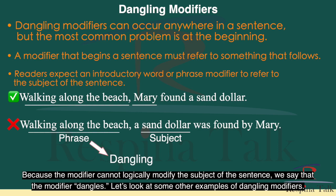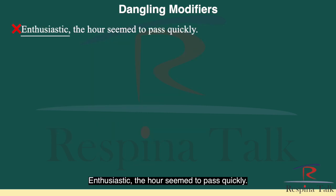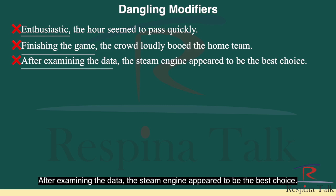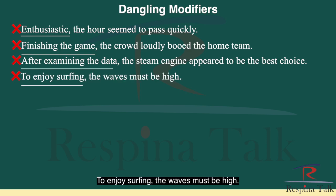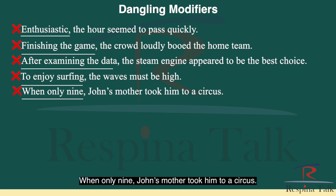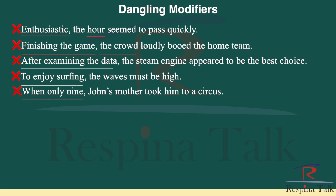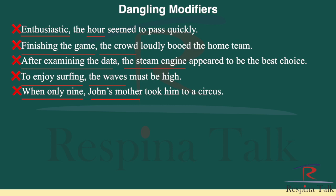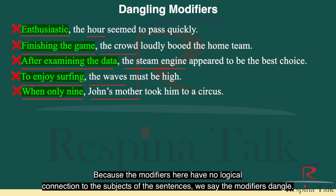Here are other examples of dangling modifiers: "Enthusiastic, the hour seemed to pass quickly." "Finishing the game, the crowd loudly booed the home team." "After examining the data, the steam engine appeared to be the best choice." "To enjoy surfing, the waves must be high." "When only nine, John's mother took him to a circus." Was the hour enthusiastic? Did the crowd finish the game? Did the steam engine examine the data? Can waves enjoy surfing? Do you believe John had a mother who was only nine? Because the modifiers have no logical connection to the subjects, we say the modifiers dangle.